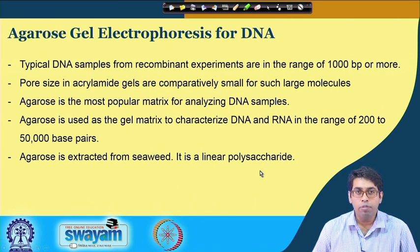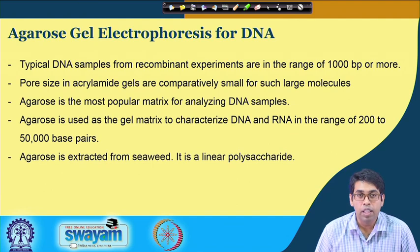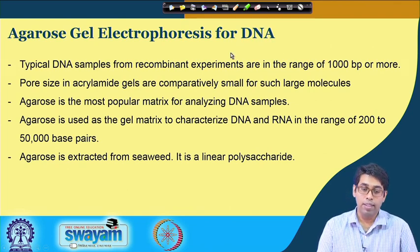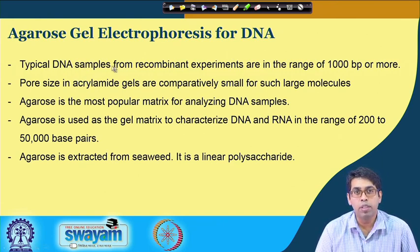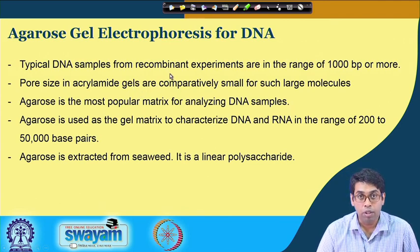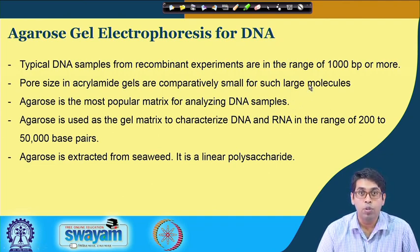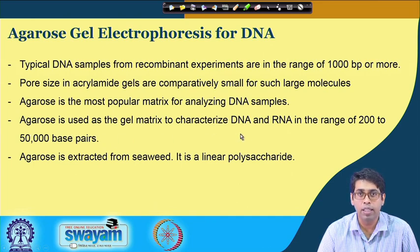All of these gel electrophoresis experiments used polyacrylamide. Another very popular gel matrix is the agarose gel. Agarose gel is typically used for nucleic acids when the size of the nucleic acid is much larger — for example, DNA from cloning experiments where plasmids or PCR products are in the range of 1000 base pairs or more. Plasmids are typically in the range of 5000 to 12000 base pairs, which are too large for polyacrylamide gels because the pore sizes are very small for such large molecules. Agarose is used as the gel matrix for DNA and RNA molecules in the range of 200 to 50000 base pairs. Agarose is extracted from seaweed and is a linear polysaccharide.